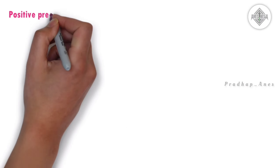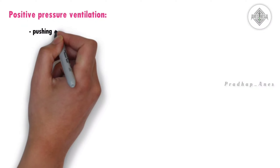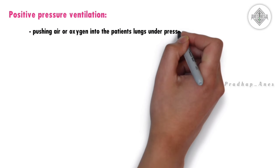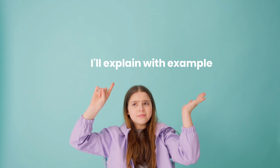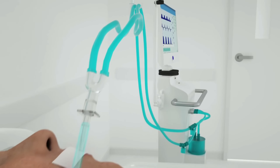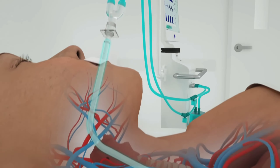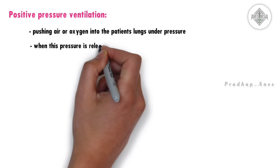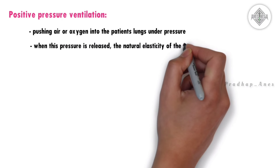Positive pressure ventilation involves pushing air or oxygen into the patient's lungs under pressure. When this pressure is released, the natural elasticity of the lungs allows the air to come out. It's like inflating a balloon — when you stop blowing, the air comes out on its own.